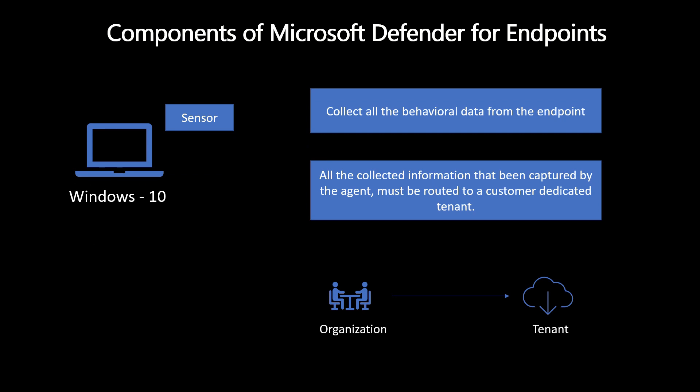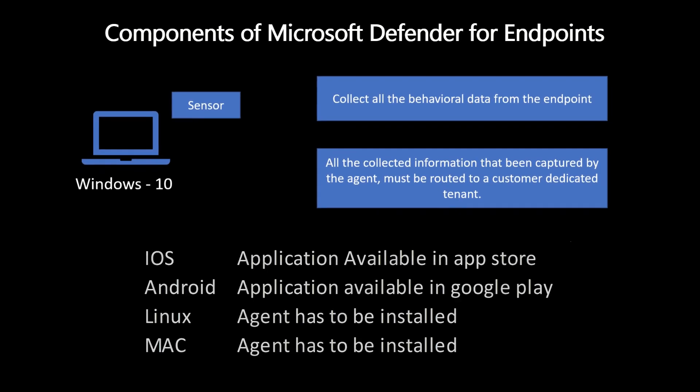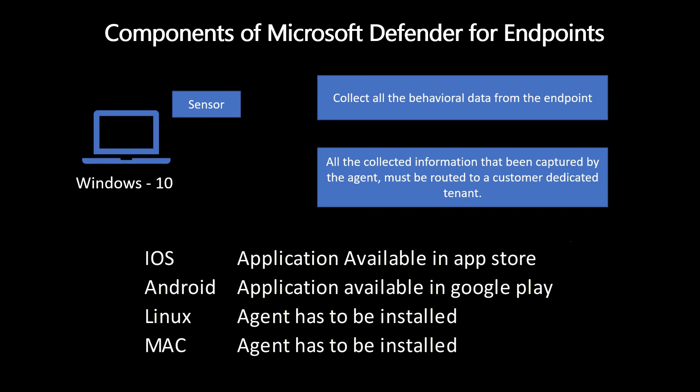Once all this information is received, the rest of the processing happens under the hood. For Windows 10 and Windows Server 2019, the agent is there by default. For older Windows editions like Windows 7 or older server versions, an agent is required. For iOS and Android, you can install the application from the App Store. For Linux and Mac, an agent is also available. So the first component for Microsoft Defender for Endpoint to work is the sensor on the device itself.